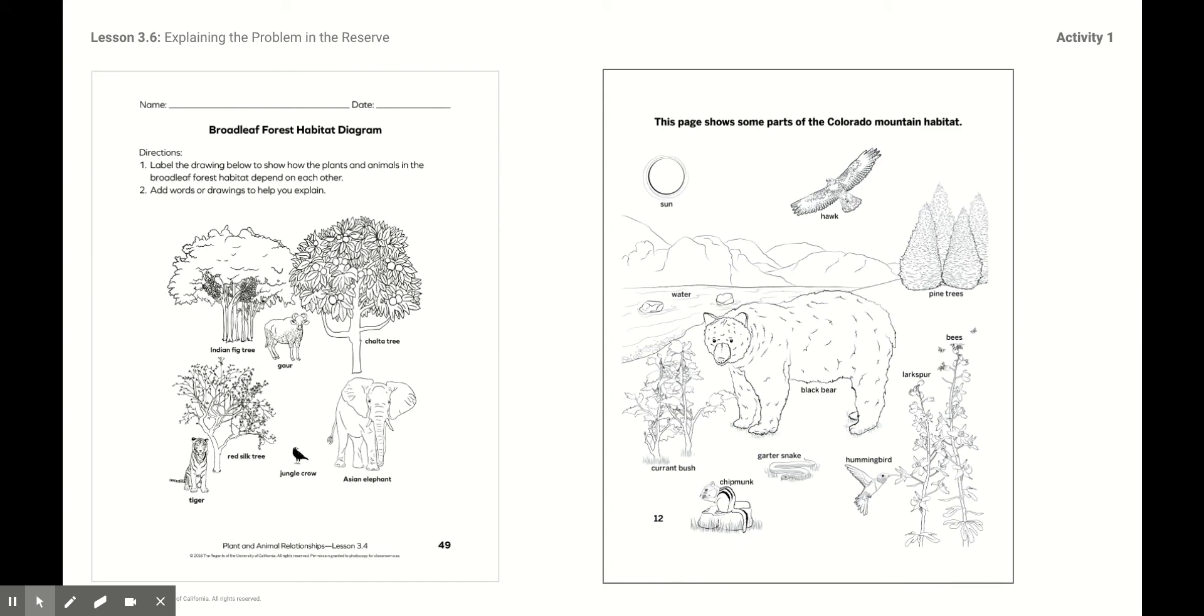Here are two separate habitat diagrams. From the last lesson, I've included the Colorado Mountain, but here's a new one from the Broadleaf Forest Habitat. These are all of the animals and trees that live within this habitat. So the Indian fig tree and the gaur animal and the chalta tree and the elephant, the Asian elephant, the jungle crow and the red silk tree and the tiger, they all depend on each other. They all eat fruit and from all of these trees to spread them around the habitat to make sure there's more trees for them to live off of.